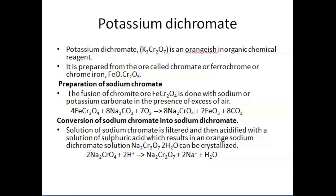The first step is the preparation of sodium chromate. In order to prepare sodium chromate, diffusion of chromate ore is done with sodium or potassium carbonate in the presence of excess of air. The reaction is: FeCr2O4 + Na2CO3 + O2 → Na2CrO4 + Fe2O3 + CO2.